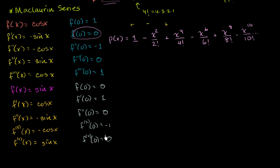And we could keep going, but once again, it seems like there's a pattern. 0, 1, 0, negative 1, 0. Then you're going to go back to positive 1, so on and so forth.